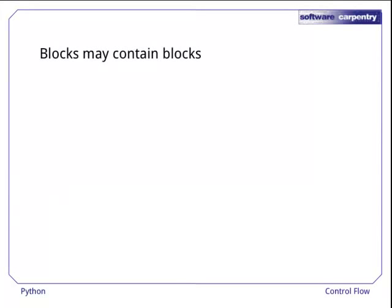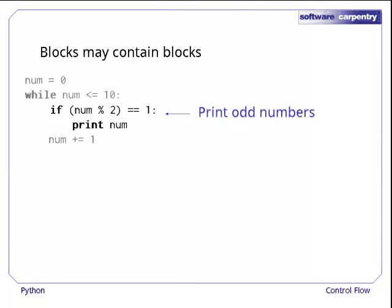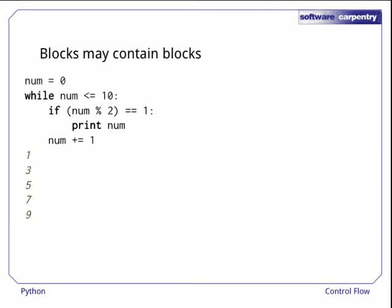Of course, blocks of code may contain other blocks. For example, in this program an if is nested inside a while. The while counts from 0 to 10, and the if prints out odd numbers. The combination prints out all the odd numbers between 0 and 10.